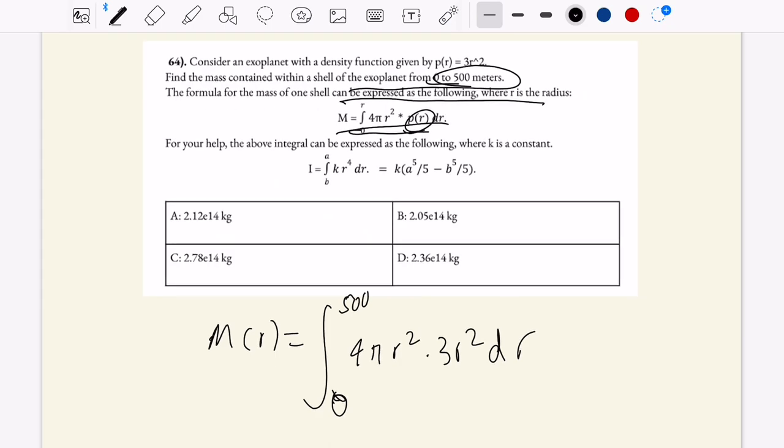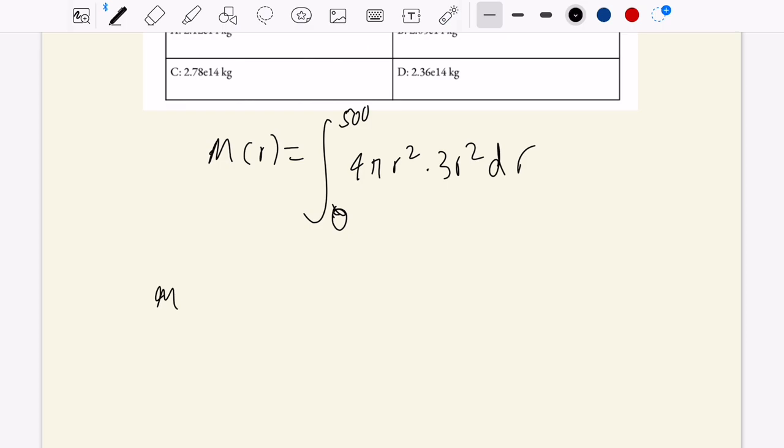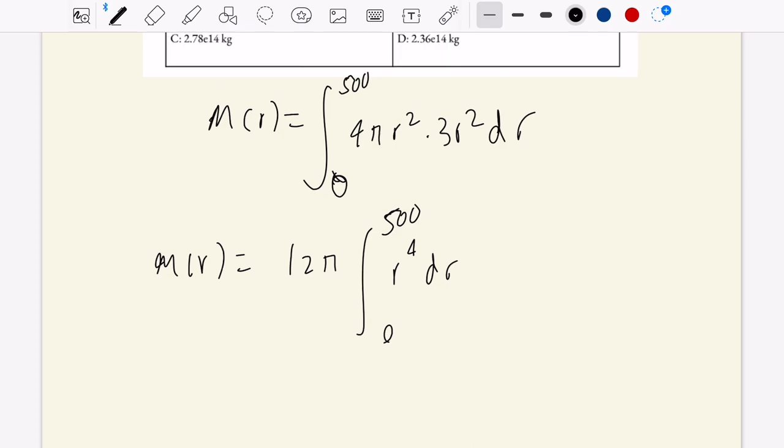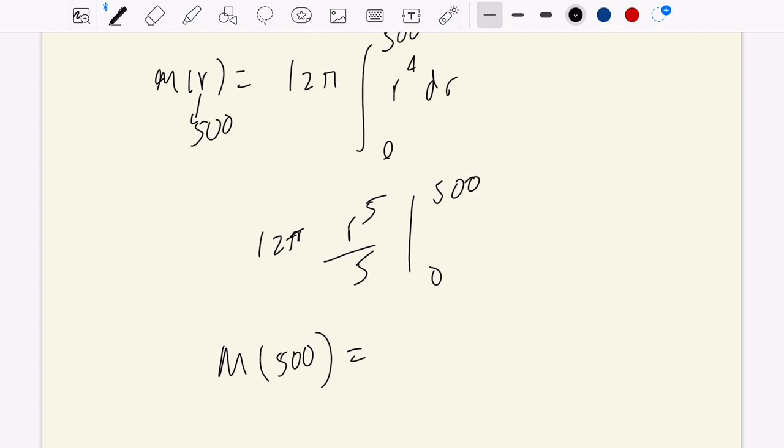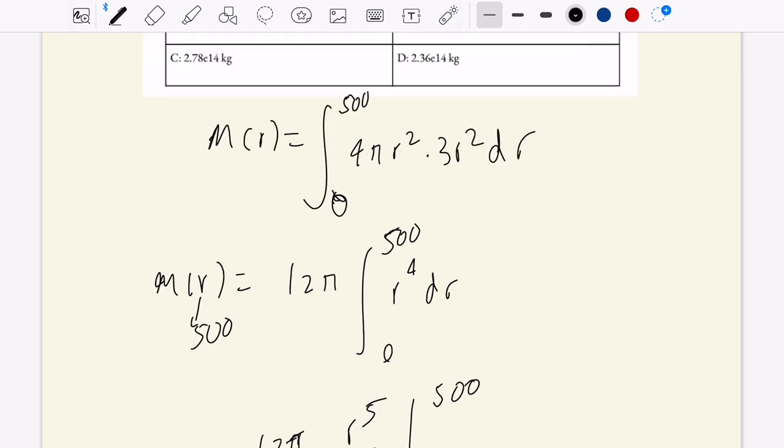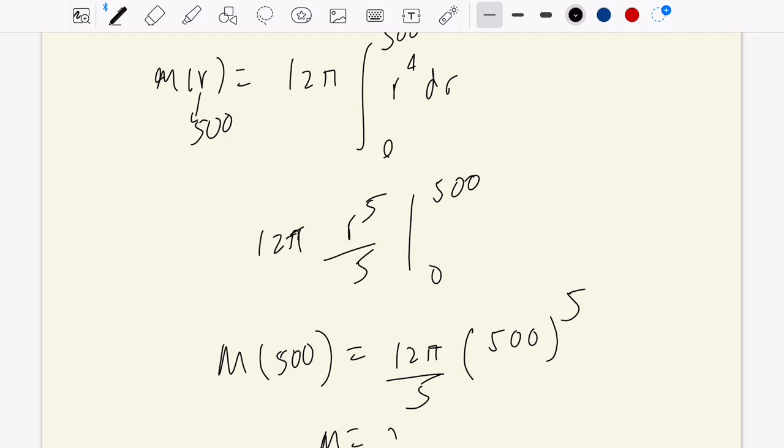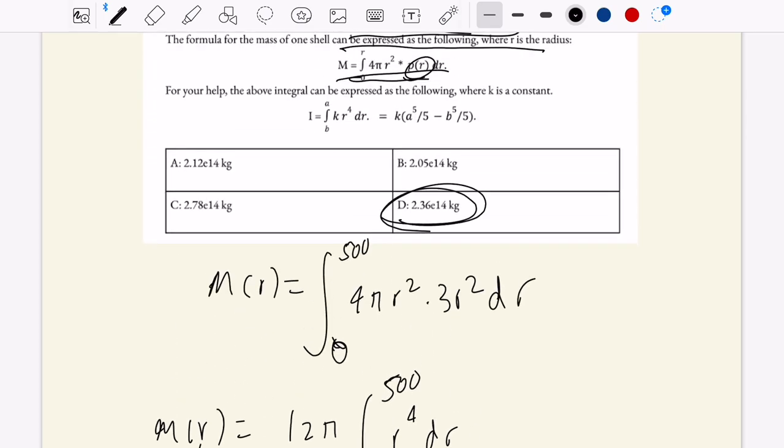So then m of r is the integral, or let's write 12 pi, integral of r to the 4th dr 0 to 500. You know that this is going to be r to the 5th if you integrate this, 500 to 0 of 12 pi. So then the mass enclosed in 500 meters is going to be equal to 12 pi times 500 to the 5th divided by 5. Let's do that in our calculator real quick. So we're getting around 2.356 times 10 to the 14th kilograms, 2.4 times 10 to the 14th kilograms, around this value. And that seems like it's going to be this answer choice right here. These two are a little bit too far off the dot.